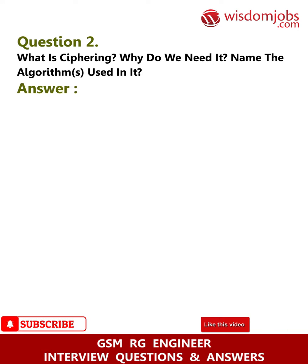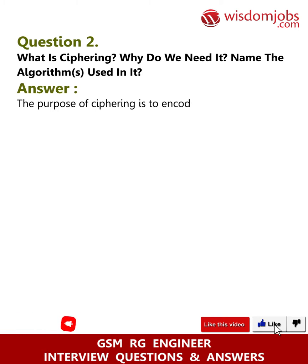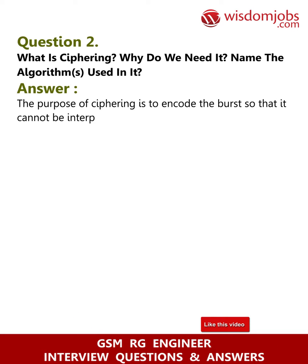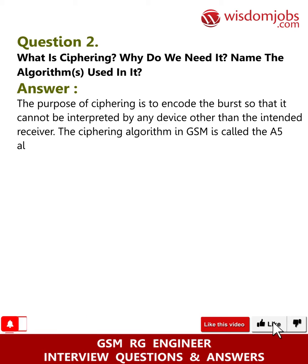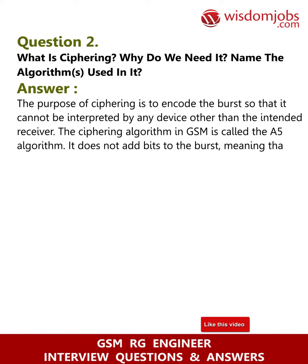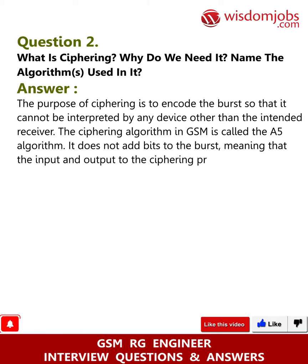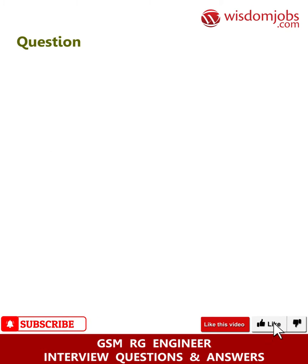Question 2: What is ciphering? Why do we need it? Name the algorithms used. The purpose of ciphering is to encode the burst so that it cannot be interpreted by any device other than the intended receiver. The ciphering algorithm in GSM is called the A5 algorithm. It does not add bits to the burst, meaning the input and output of the ciphering process are the same size.